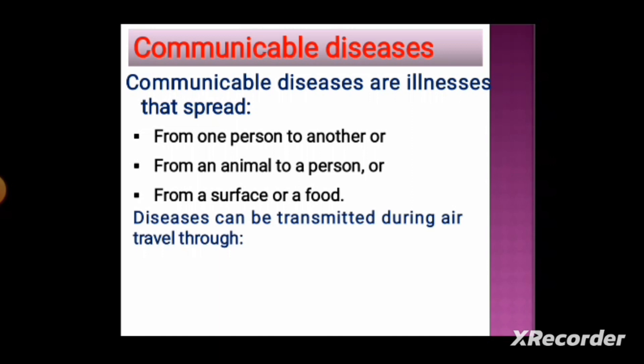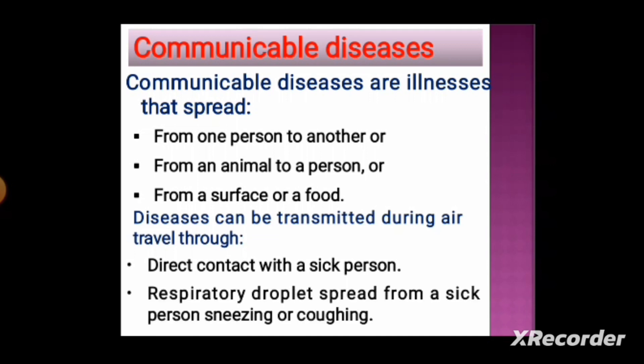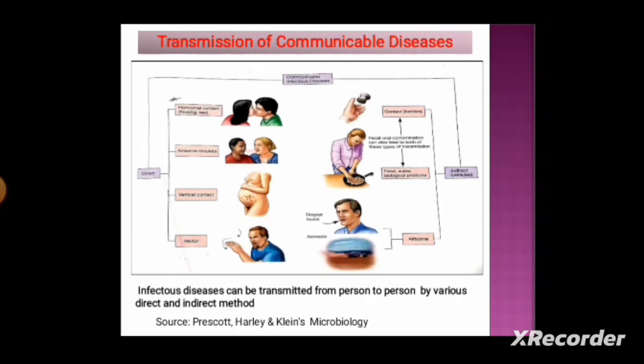Diseases can also be transmitted during air travel through direct contact with a sick person, or through respiratory droplet spread from a sick person sneezing or coughing. Examples include influenza, measles, and COVID-19. This image shows how communicable diseases can be transmitted from person to person by various kinds of direct and indirect methods.